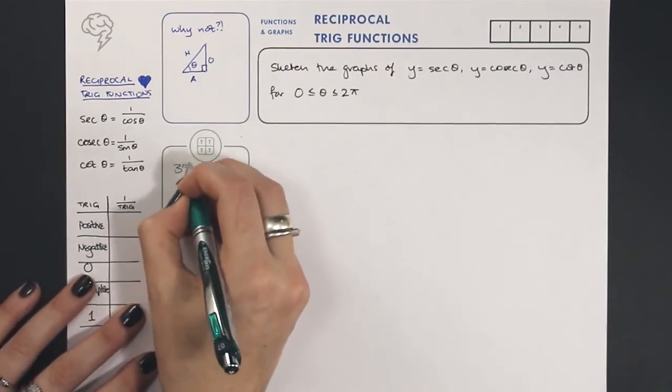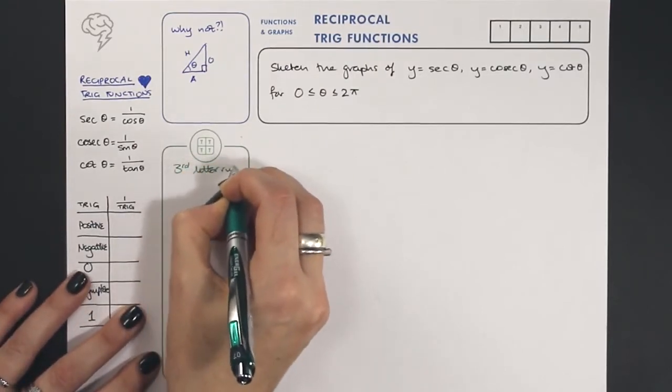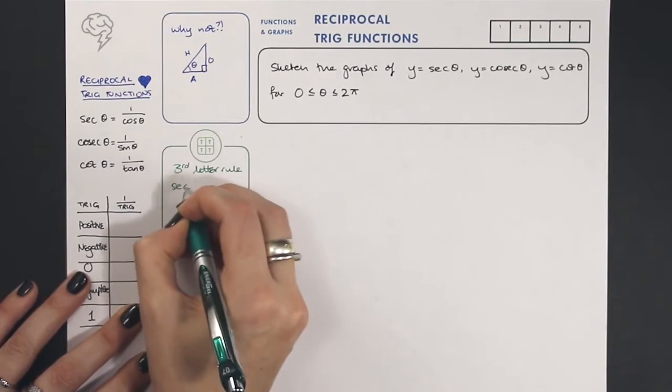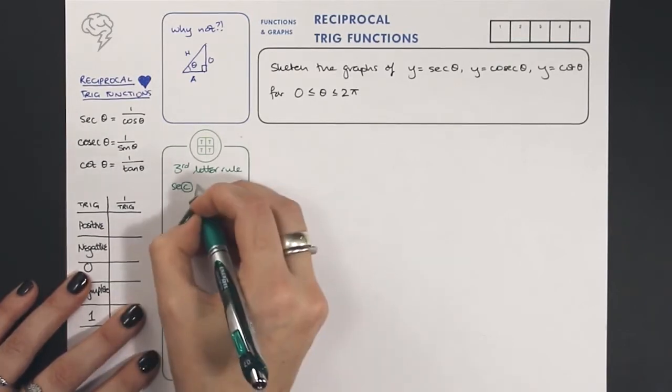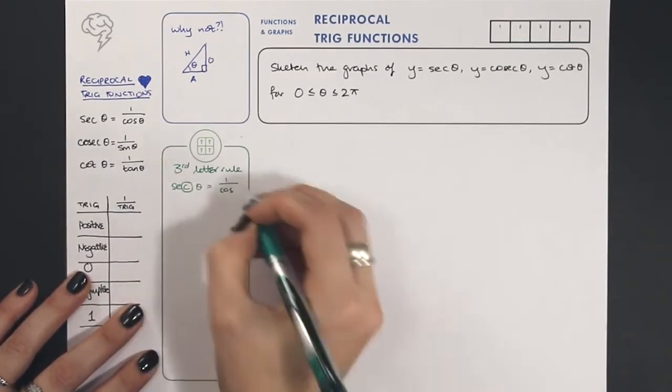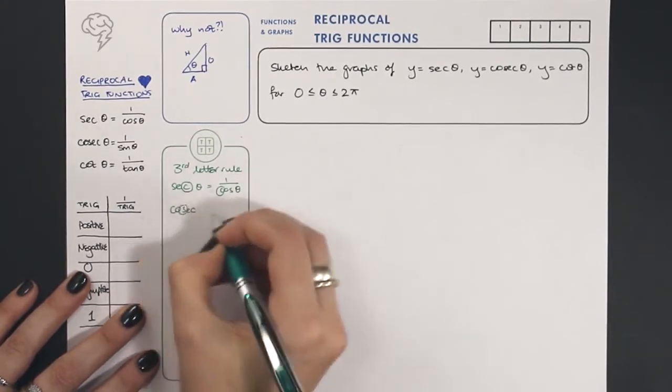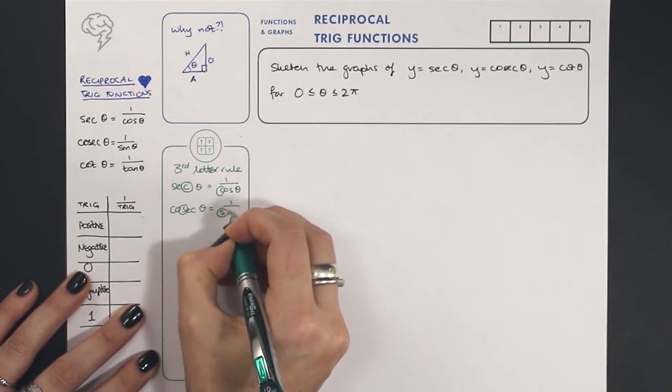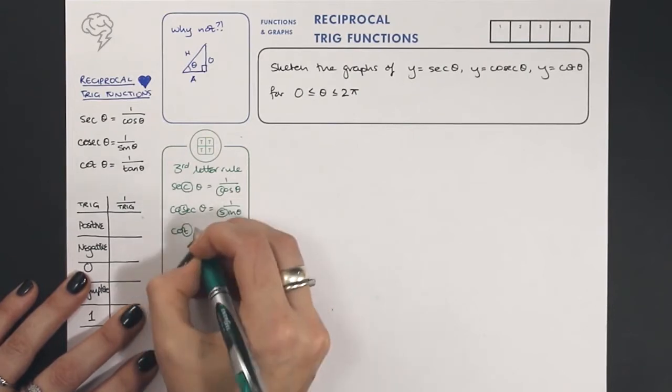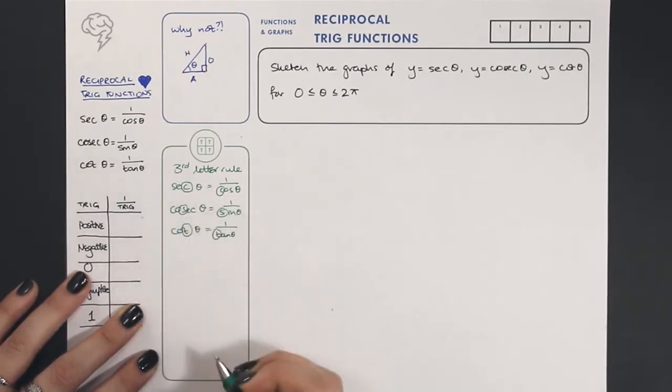How do we remember? Look at the third letter, third letter rule. So sec, third letter is a C, is one over cosine. And cosec, third letter is an S, one over sine. And cot, third letter is a T, one over tan.